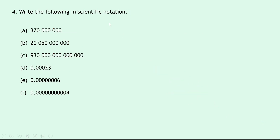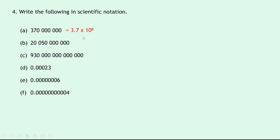Question four says to write the following in scientific notation. The way we do this is to make sure the decimal point goes after the first non-zero number. For part a, 370,000,000 becomes 3.7 times 10 to the 8 — we place the decimal point after the first non-zero number and count how many places along until we get to the end, which tells us our power. Moving the point gives us 1, 2, 3, 4, 5, 6, 7, 8 places, so the power is 8.